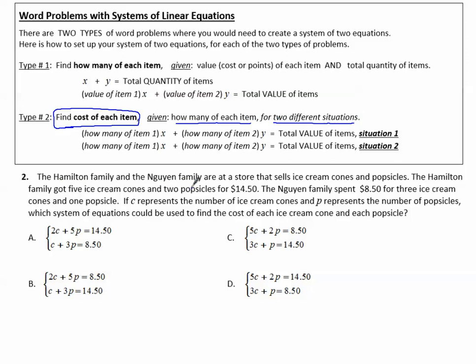For example, the Hamilton family and the Nguyen family are at a store that sells ice cream cones and popsicles. The Hamilton family got five ice cream cones and two popsicles for $14.50.